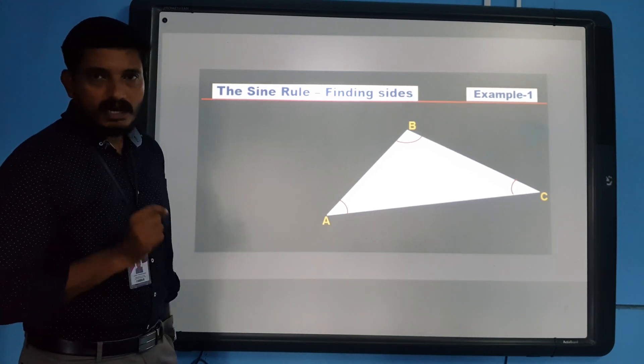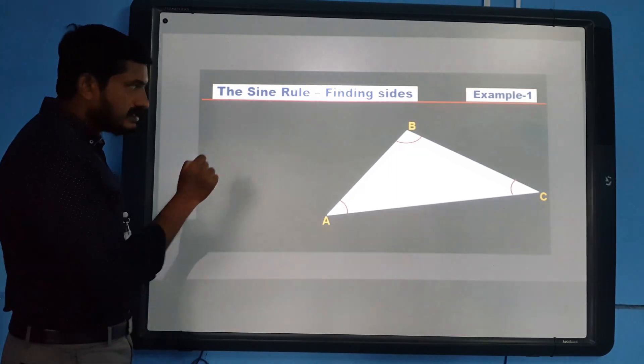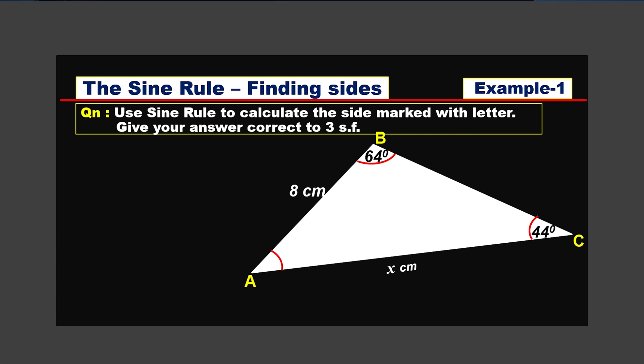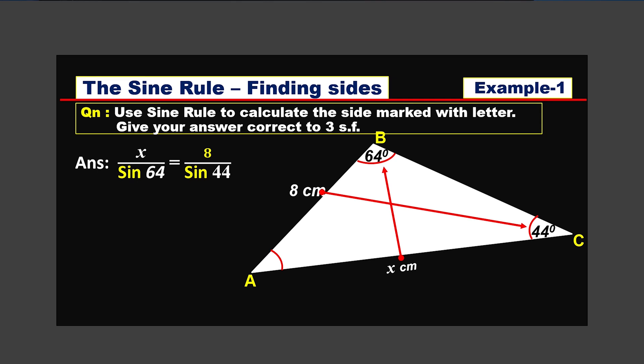Now let's see with the help of an example how we can use the sine rule to find the missing sides of a triangle. In triangle ABC, we have two sets of values: a 44-degree angle and the side of 8 centimeters opposite to it, and a 64-degree angle with the side marked X opposite to it. The first statement using the sine rule is: x divided by sine 64 is equal to 8 divided by sine 44.